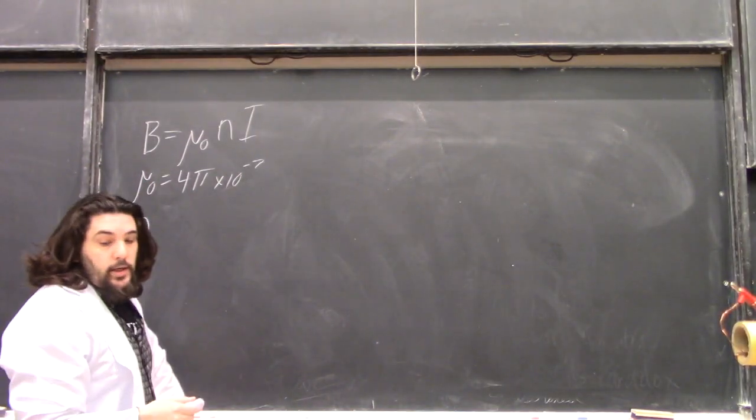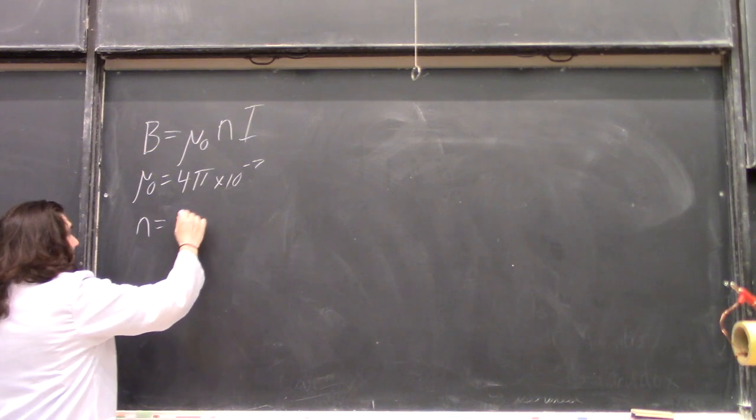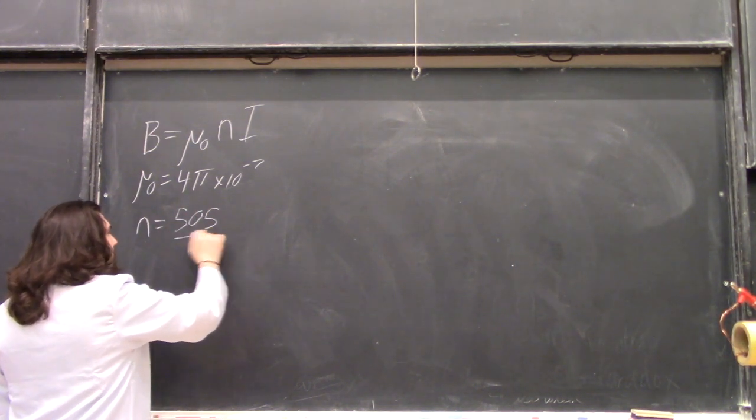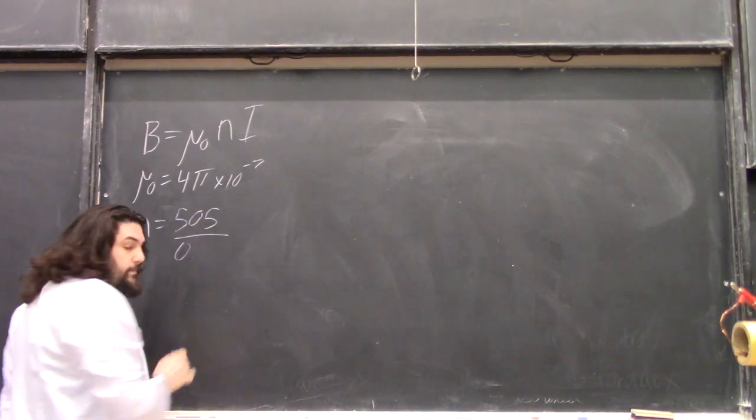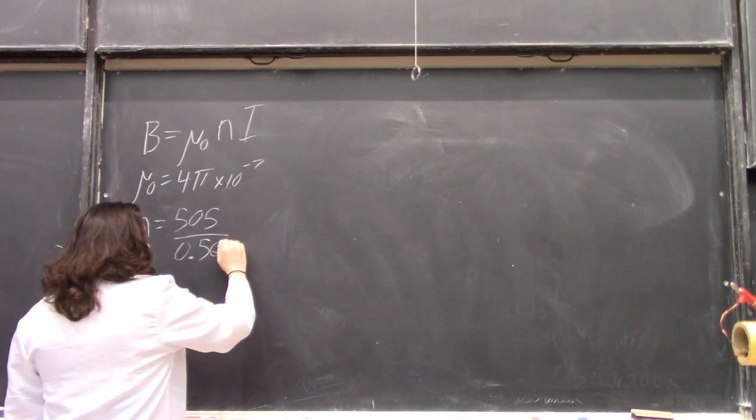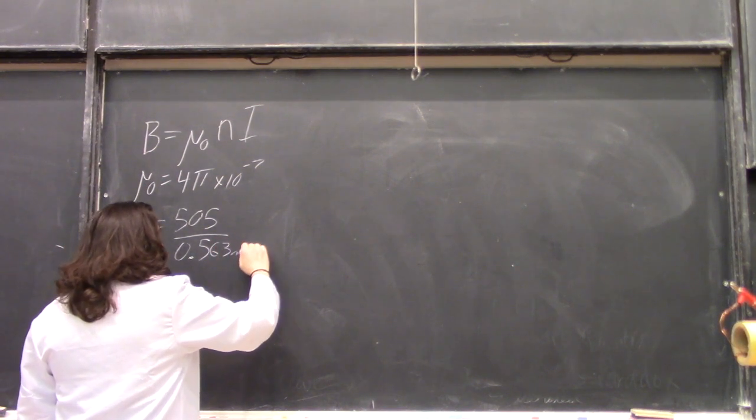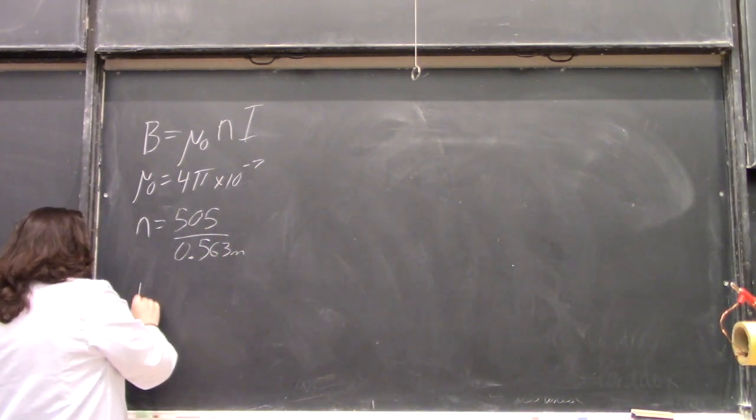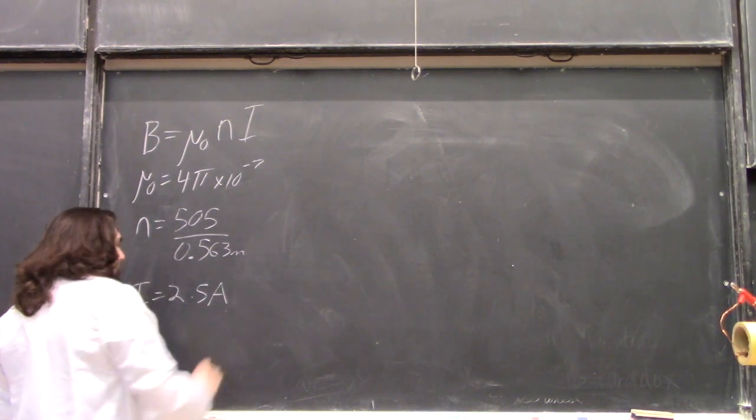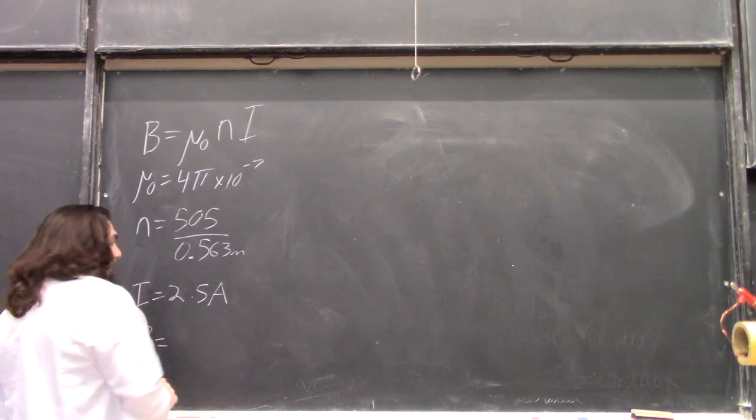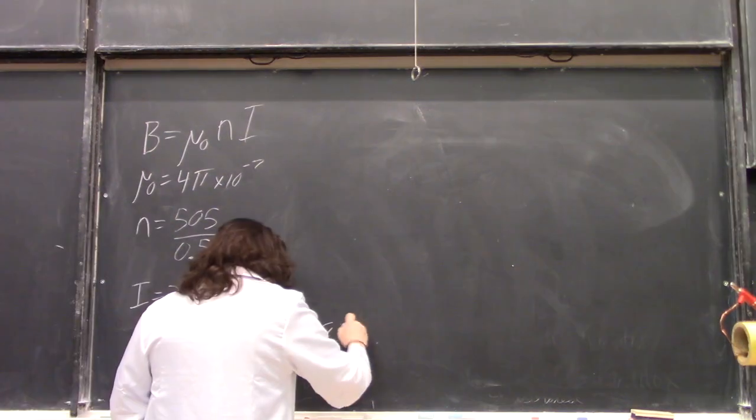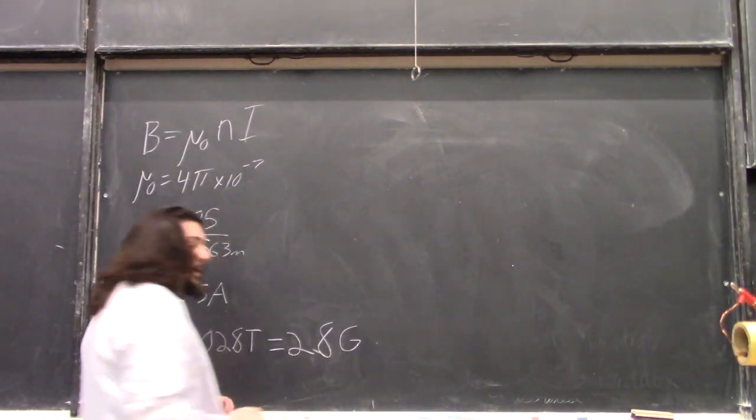For this solenoid here, the density is 505 turns over 0.563 meters, and the current is 2.5 amps, which gives us a B field of 0.0028 tesla, or about 28 gauss.